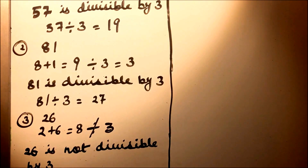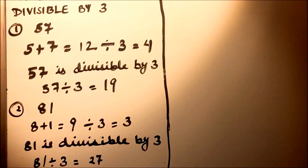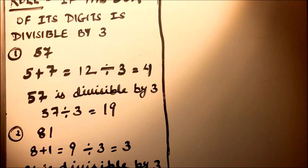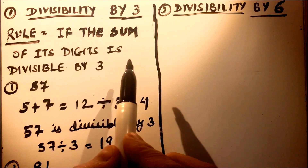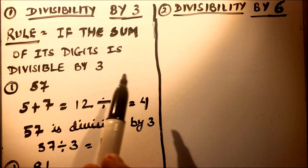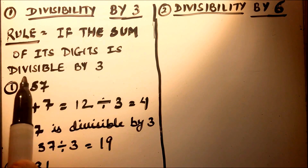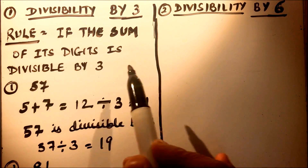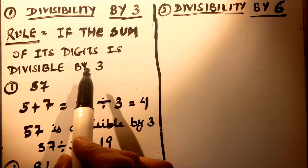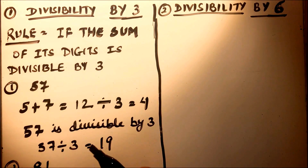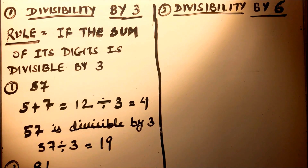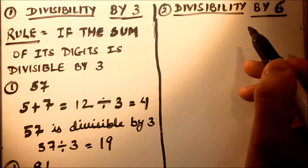So the rule for divisibility by 3 is: we need to add the digits of the number and then check whether the sum is divisible by 3. If it is divisible, then the number is divisible by 3; otherwise it is not. Now let's check the divisibility of a number by 6.